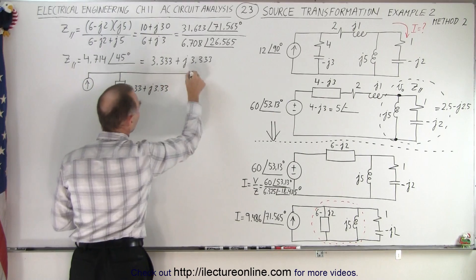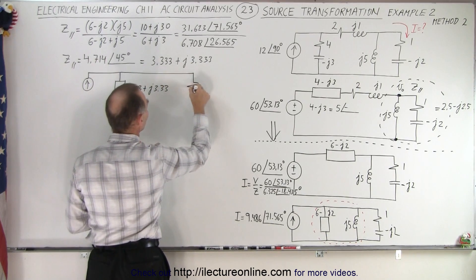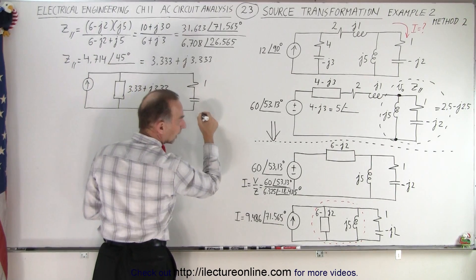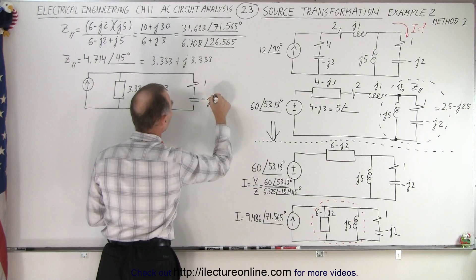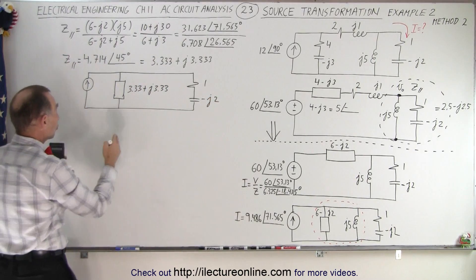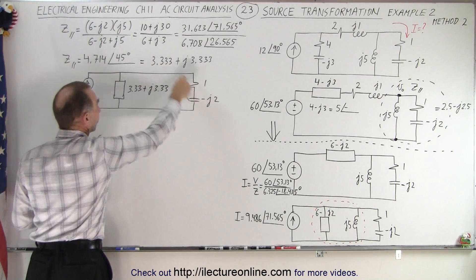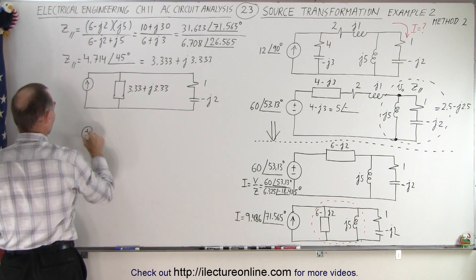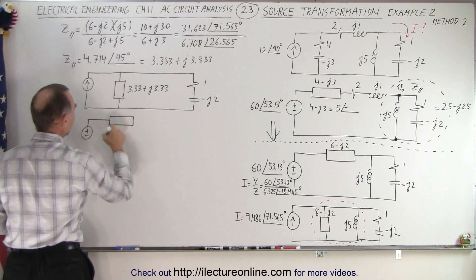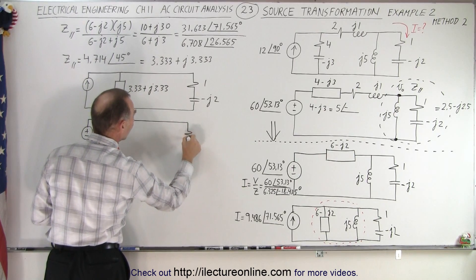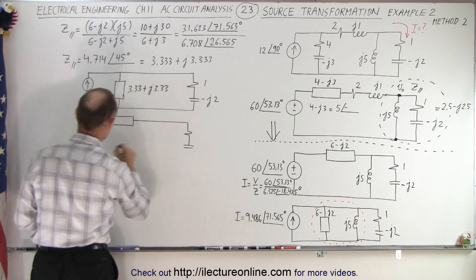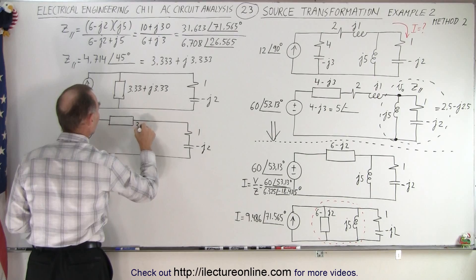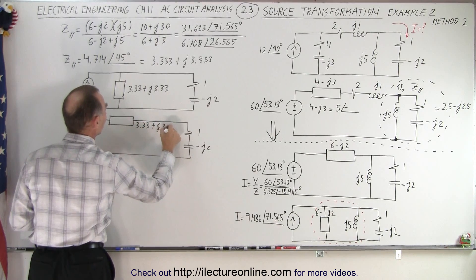That is in parallel with the final branch, which has a resistor and a capacitor — 1 ohm and minus j2. Now you can see that if we transform it again, we put this over here in series with the rest — that makes it a pretty easy circuit to deal with. So we're going to re-transform this into a voltage source with a series impedance in series with this part of the circuit. The impedance becomes 1 minus j2, and this becomes 3.33 plus j3.33.